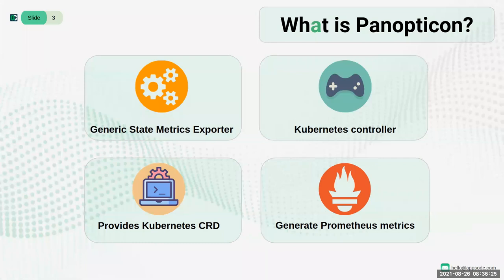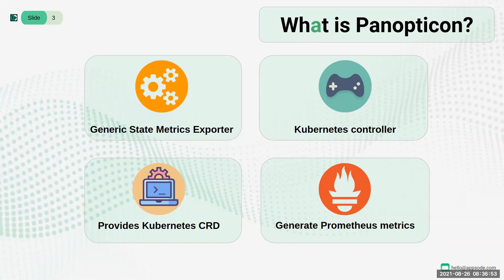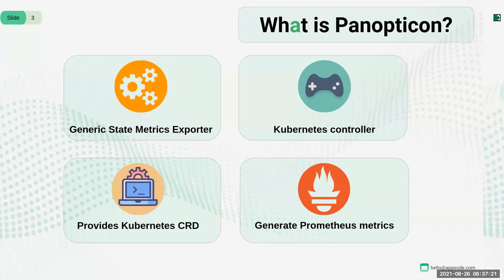Panopticon is a generic state metrics exporter for any kind of Kubernetes resources. Using Panopticon, you can generate metrics from Kubernetes native and custom resources without modifying the actual resource. It has a Kubernetes controller and provides a Kubernetes CRD called MetricsConfiguration. In MetricsConfiguration, you specify the configuration about the metrics of your targeted resource and apply it, then Panopticon does the rest. The metrics are exposed on an HTTP endpoint called /metrics, served as plain text, designed to be consumed by Prometheus or any scraper compatible with a Prometheus client endpoint.